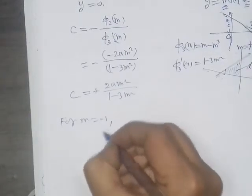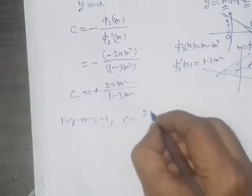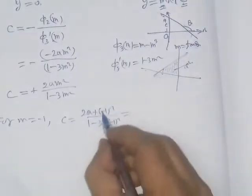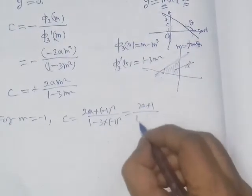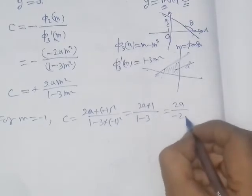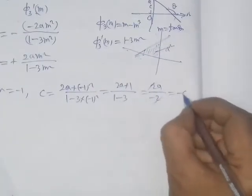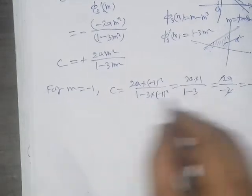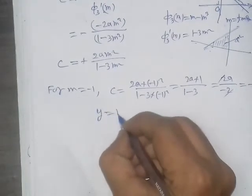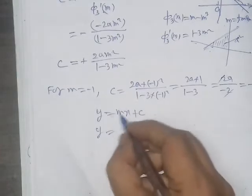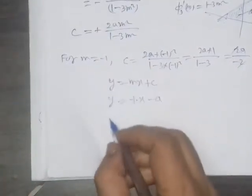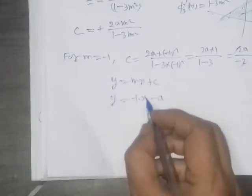For m equals minus 1: C equals 2a × (minus 1)² upon (1 minus 3 × (minus 1)²) equals 2a × 1 upon (1 minus 3) equals 2a upon minus 2 equals minus a. So for m equals minus 1 and C equals minus a, the asymptote y equals mx plus C gives y equals minus x minus a.